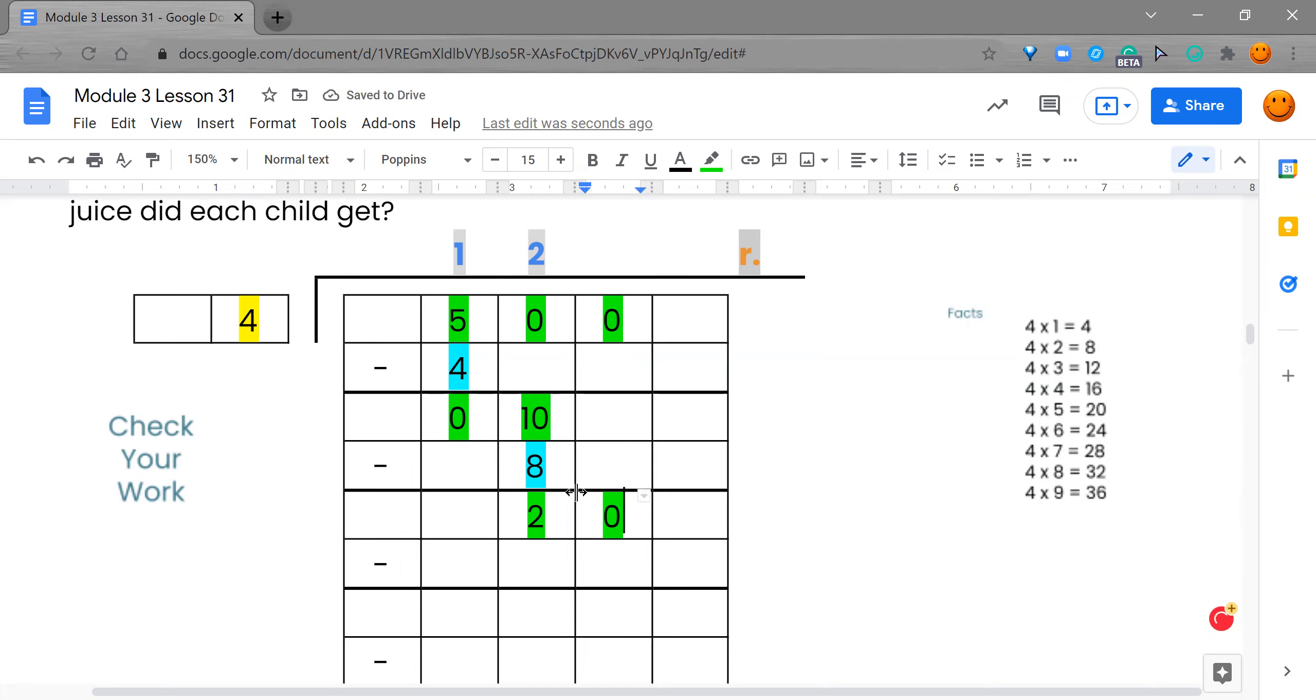Now I bring down my zero. And I look for four into twenty. So I'm looking and here's twenty. And look, it's five. So right up here, I'm going to write a five. Five times four is twenty. Now I'm going to go ahead and subtract. Twenty minus twenty is zero. Great job, you guys. Now we're going to go see if we're really correct. We're going to check our answer. So we're going to take the one twenty five and multiply it by four.